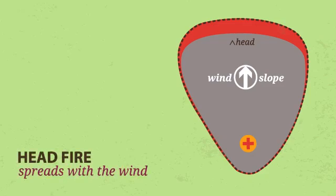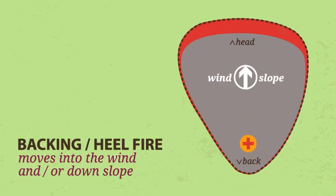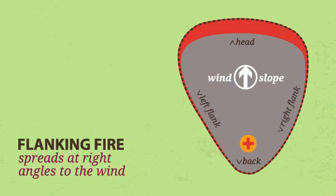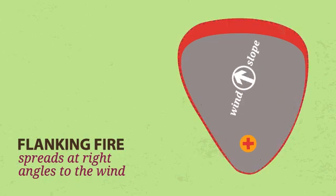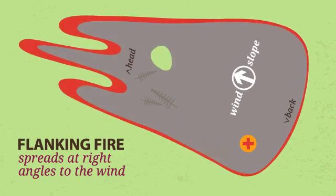The slowest spreading part of the fire opposite the head is called the back or rear. A backing or heel fire is normally moving into the wind and/or downslope. The sides of the fire, or flanks, will spread at intermediate rates and burn outward at right angles to the wind or slope, and this is called a flanking fire. It is important to note that the behavior of backing or flanking fires can change quickly with a wind shift, changing the slow rate of spread flanking fire into a fast rate of spread head fire.